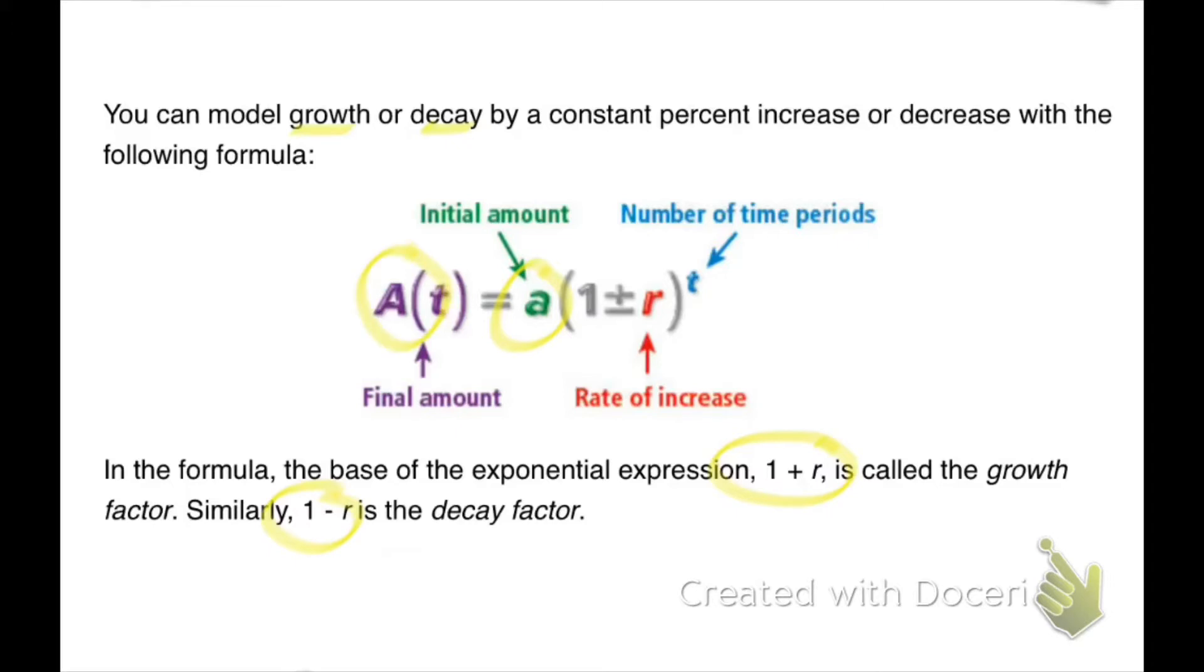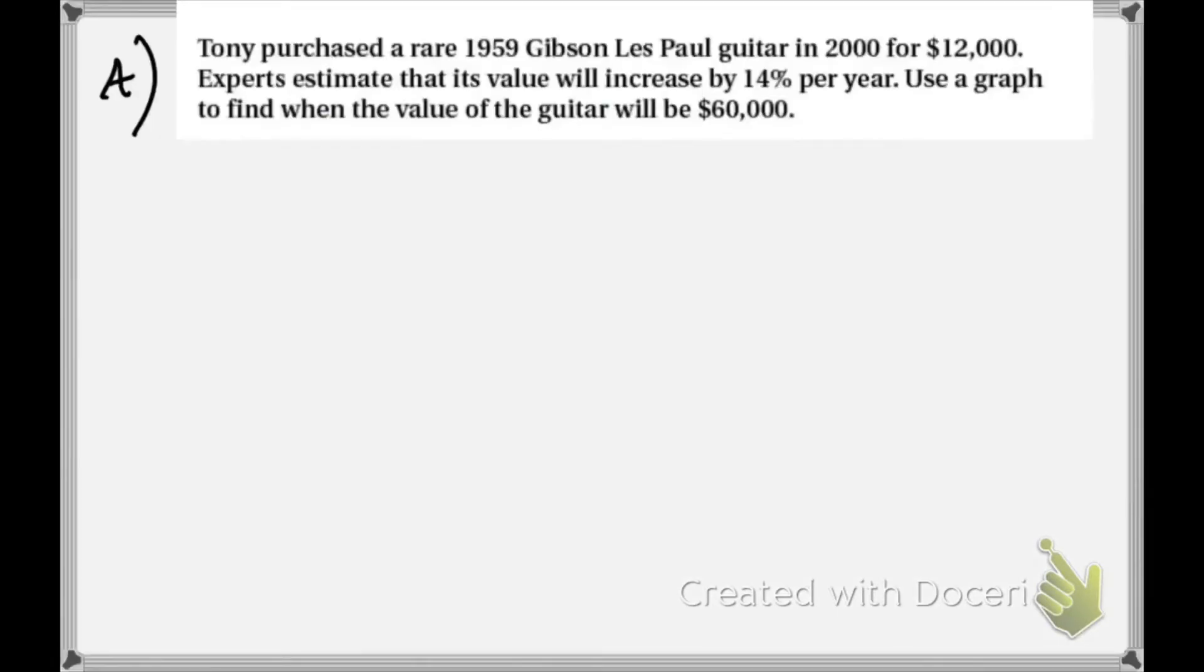So growth, we're going to add the rate of increase. Decay, we're going to subtract away the rate of increase from one. But this is our formula that you have to know. Let's do a few examples with this. So I'll go ahead and write it: A(t) equals a times parenthesis one plus or minus r raised to the t. So there's our formula.